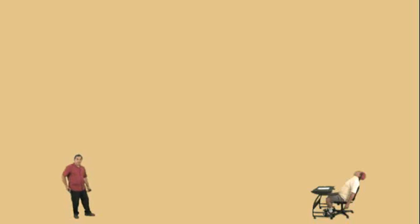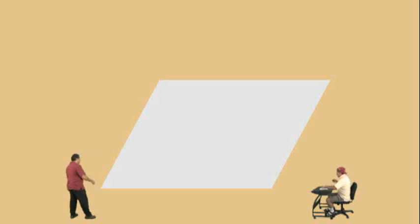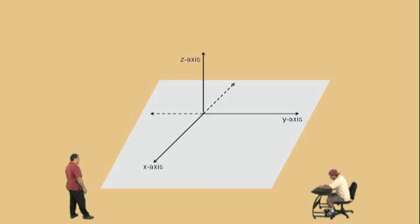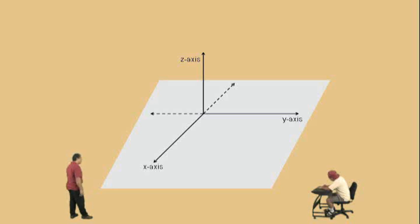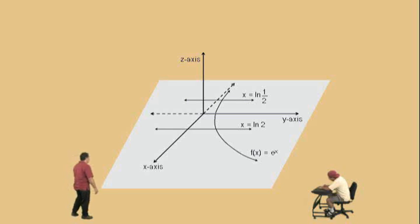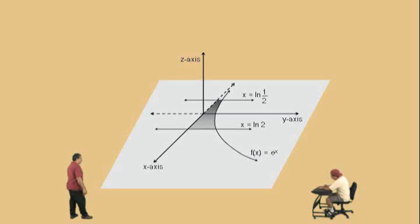Charlie, what are you doing over there? You got your worksheet? All right, let's get started right there. There's our graphing plane, there's our x-axis, our y-axis, and our z-axis. Today we're going to be dealing with a bounded region that is bounded between the x-axis, the line x equals natural log of one-half, the line x equals natural log of two, and the exponential function f of x equals e to the x. That shaded region indicates our bounded region.